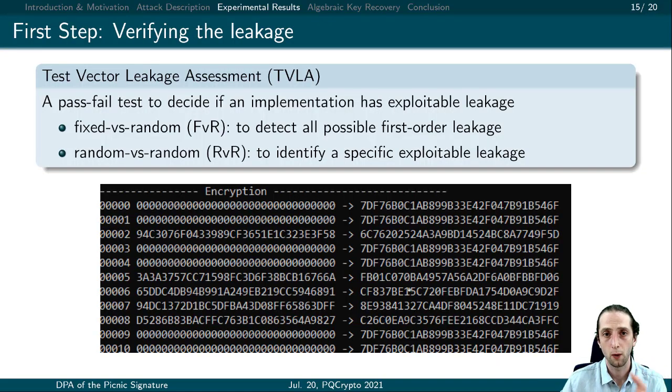As our first step, we would like to verify this leakage. This can be done by a simple leakage analysis test. As our test tool, we used TVLA, which is Test Vector Leakage Assessment. This is a simple statistical tool used in the literature for leakage analysis. It's a pass-fail test to determine if an implementation has leakage or not. What we call a leakage in this case is the data-dependent behavior of the device.